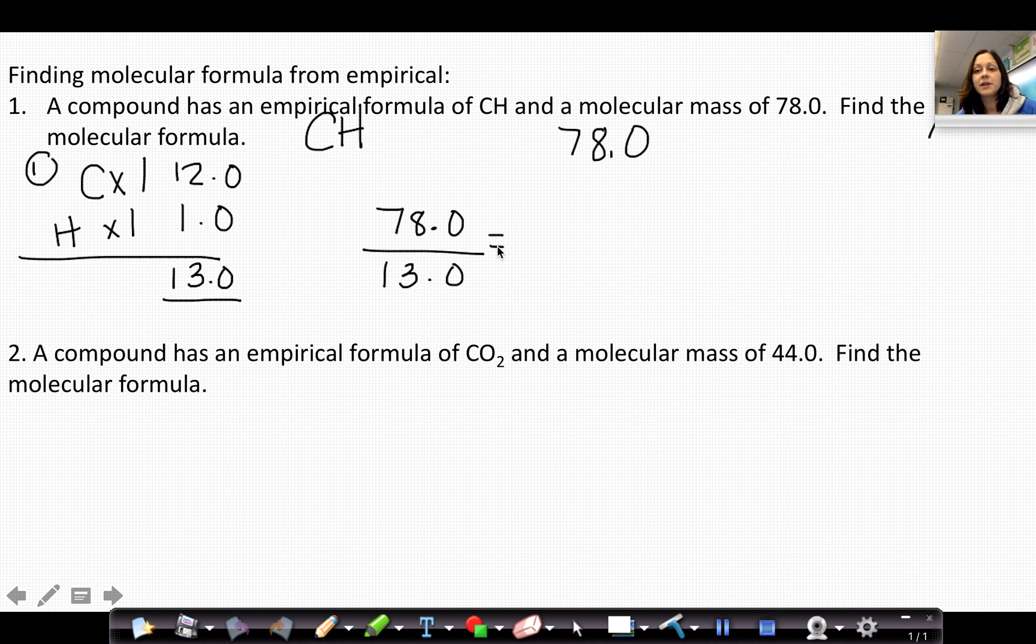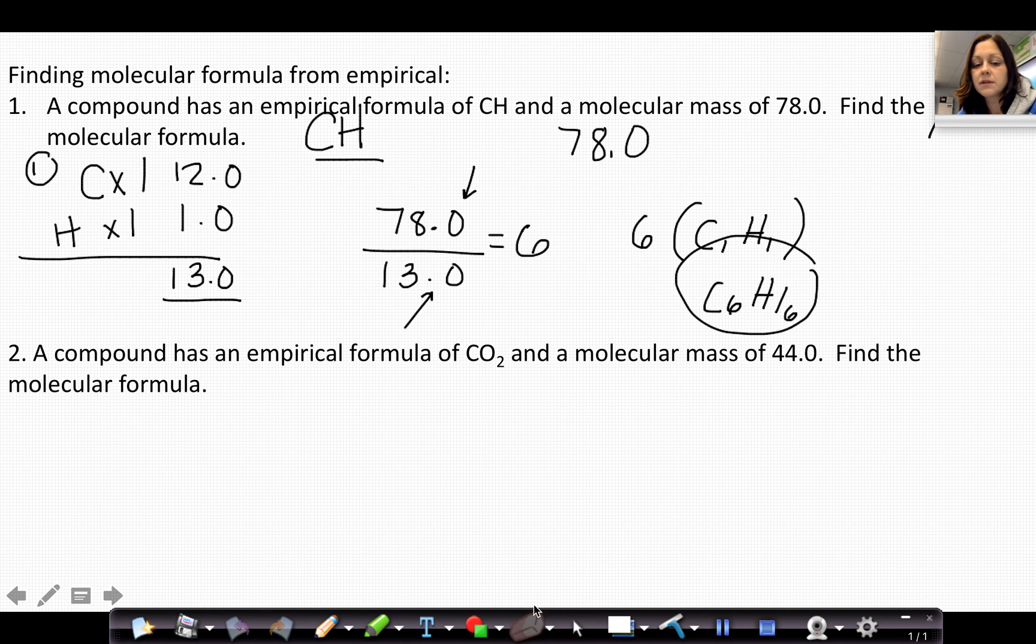Then we're going to take the mass of the molecular formula and divide by the mass of the empirical formula. When we do that, we get a number, and in this case we get a 6. So since the molecular formula is 6 times the mass of the empirical formula, we're going to multiply the subscripts from the empirical formula by 6, so that our molecular formula is C6H6.